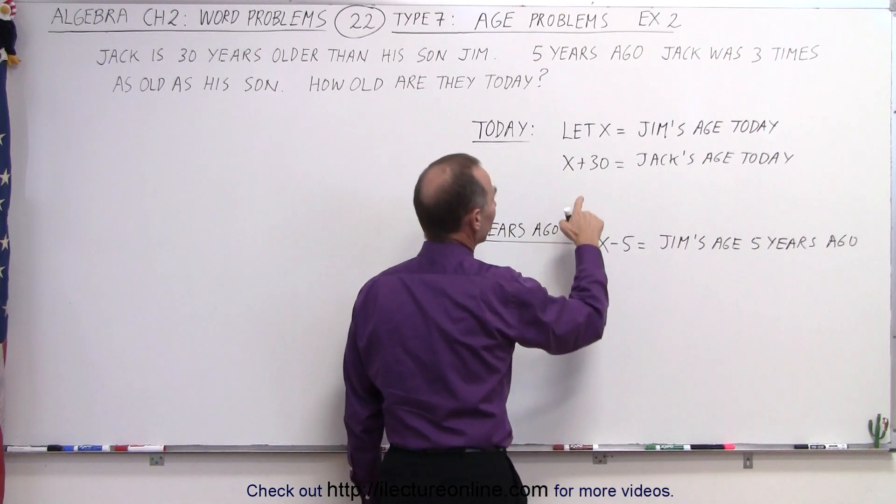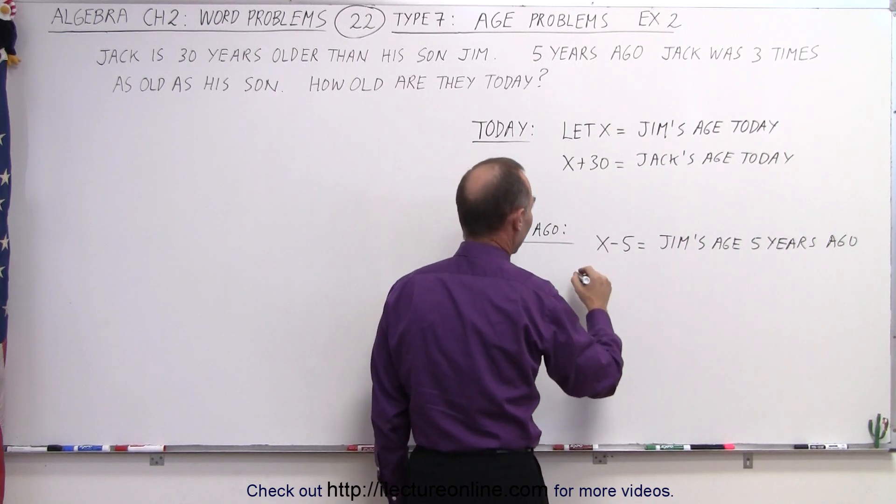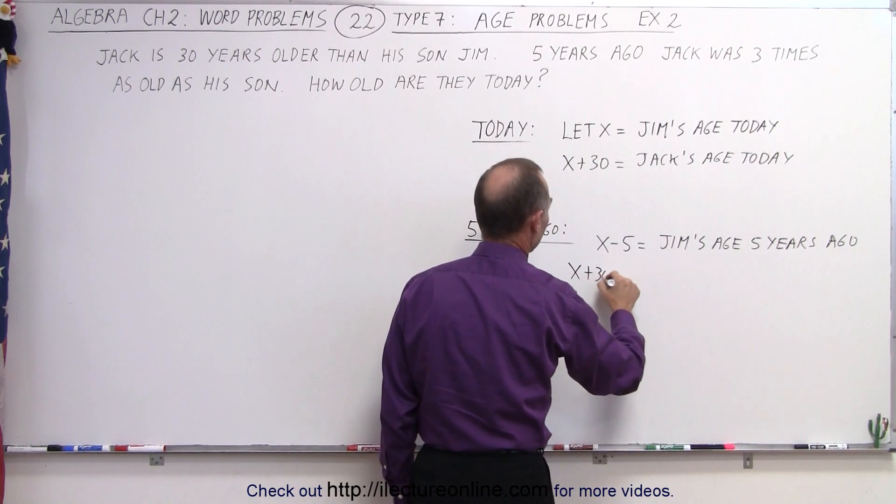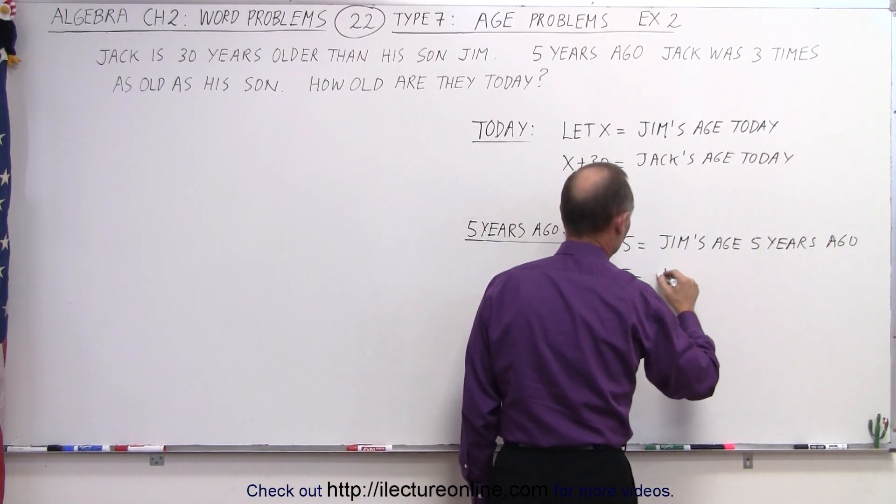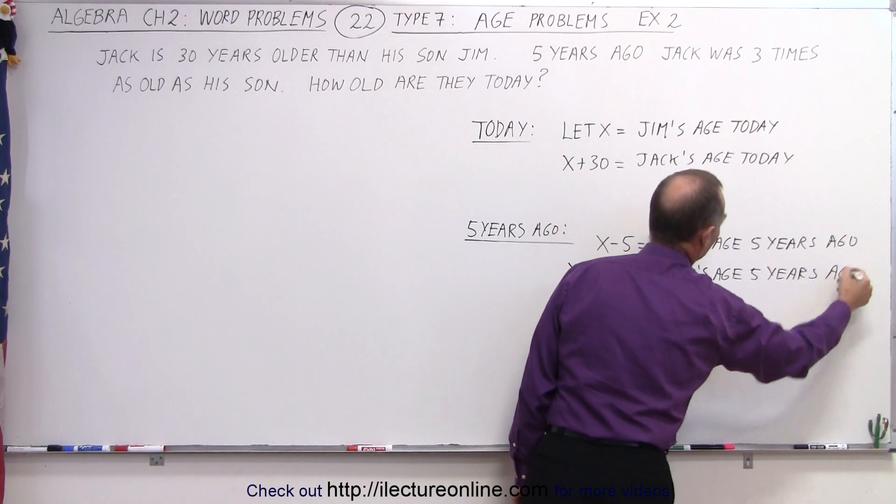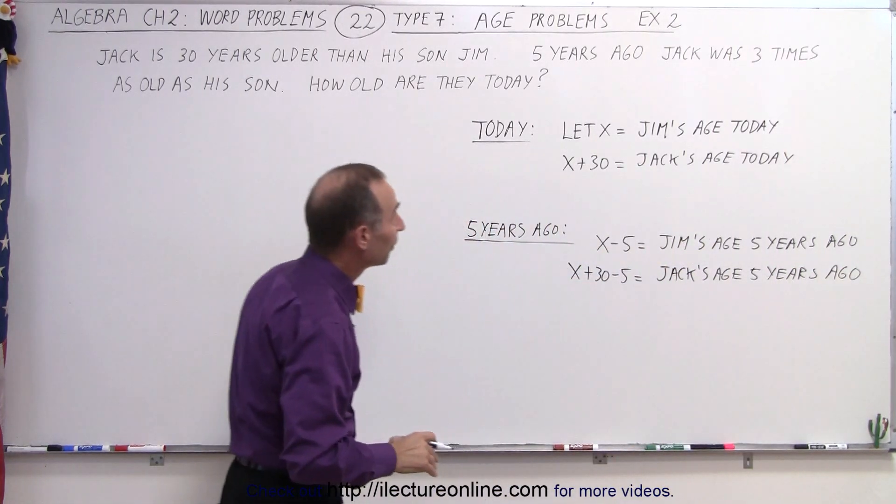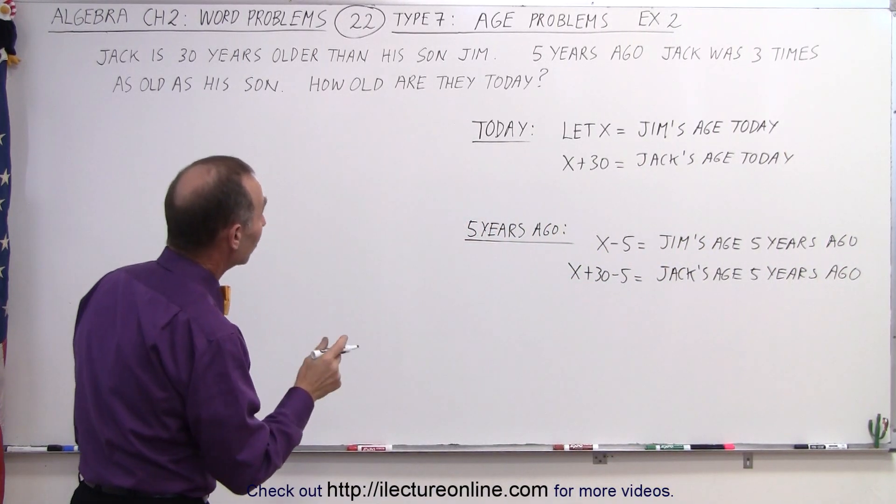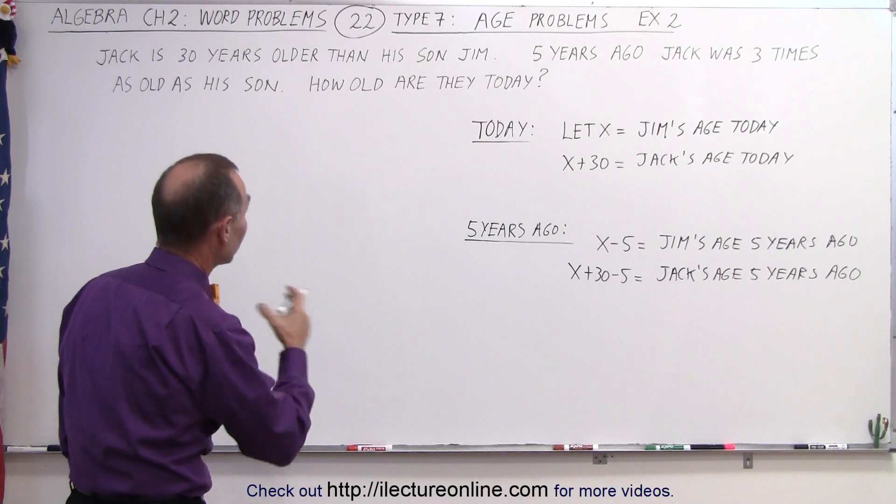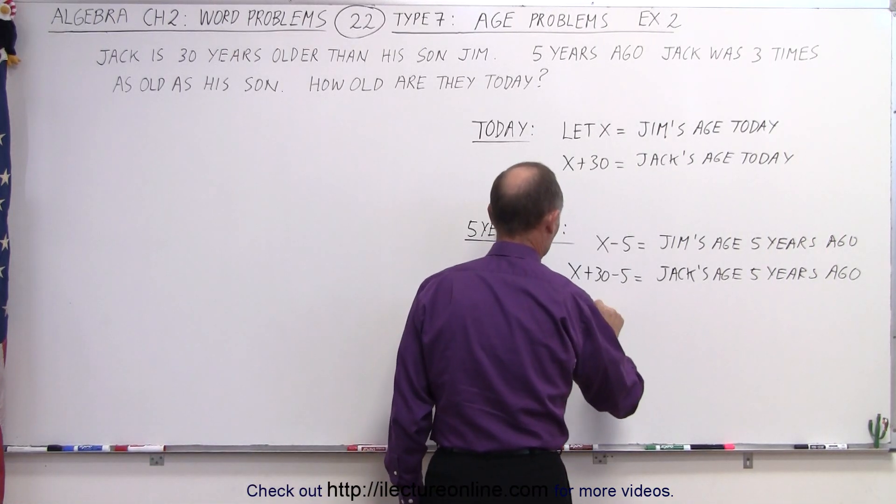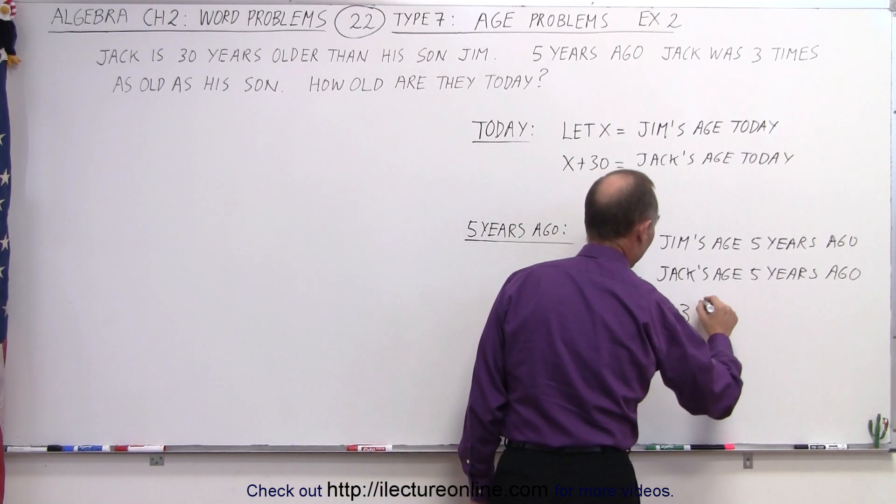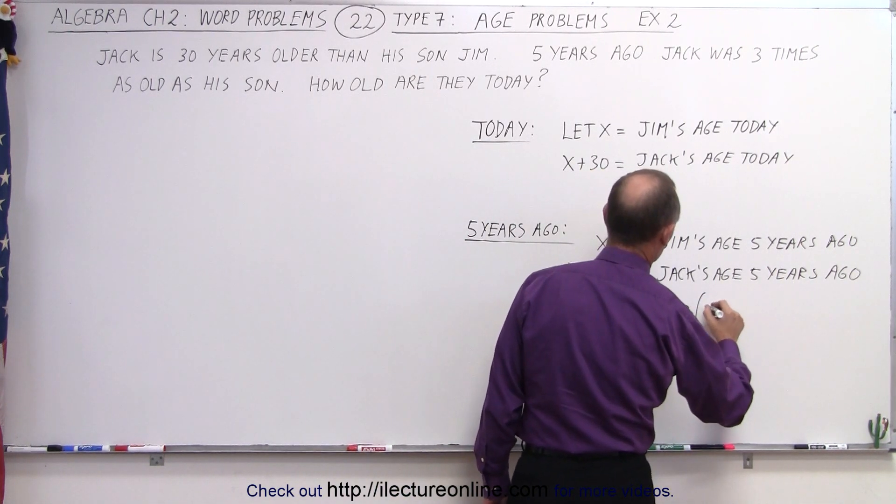And we can then say that x plus 30 minus five will be Jack's age five years ago. Now we need a relationship. They also tell us that Jack was three times as old as his son and that is five years ago. So Jack's age...